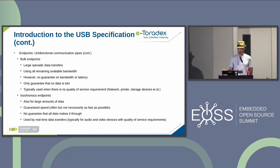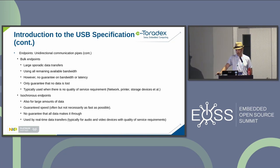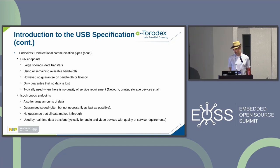Isochronous endpoints are where it gets really interesting — you can do larger transfers with guaranteed speed. You do it periodically, often not as fast as possible, because you allocate a certain amount of bandwidth. However, there is no guarantee that all data will make it through. These are used by real-time data transfer applications such as audio or video devices.